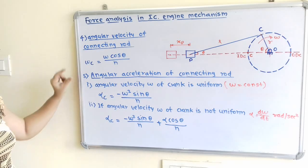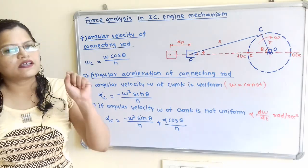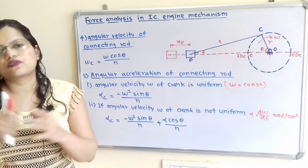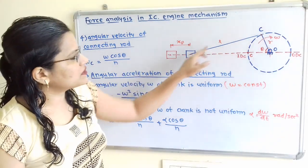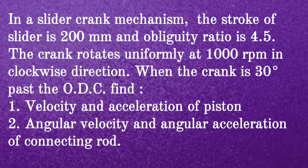When the answer for angular velocity or angular acceleration of the connecting rod is negative, we conclude that the direction of rotation of the connecting rod and the crank are the same. Given question: In a slider crank mechanism, the stroke of the slider is 200 mm and the obliquity ratio is 4.5. The crank rotates uniformly at 1000 rpm in the clockwise direction. When the crank is 30 degrees past the outer dead center, find: (1) velocity and acceleration of piston, (2) angular velocity and angular acceleration of connecting rod.